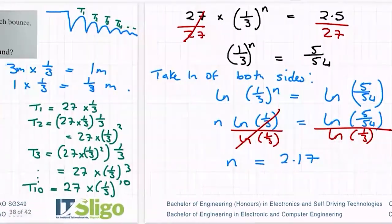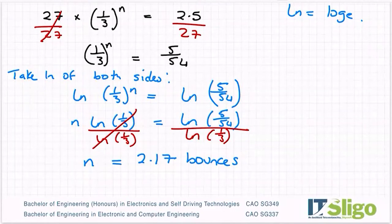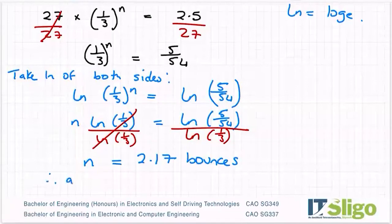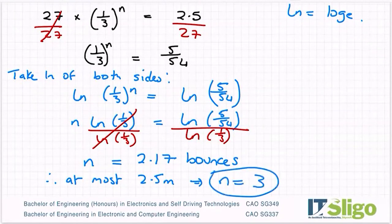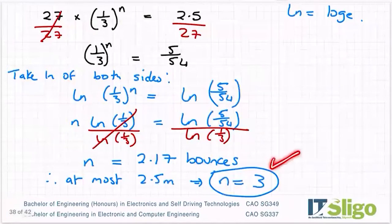So in exactly 2.17 bounces, if such thing could exist, you would be at a height of 2.5 meters. So if you need to be at most 2.5, then you're going to have to complete that bounce and go for the third one, so that you end up under the 2.5 meters. So you either see the answer, or you can work out the answer.